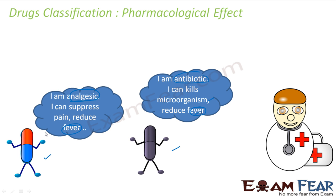You go to the doctor and say you have fever, headache, or a bad stomach. The doctor gives you medicine based on what you have. If you have fever, he will give you paracetamol. If you have headache, the doctor may give you a medicine to reduce it — and sometimes the same medicine works. This classification is based on the pharmacological effect of the drugs, and it is useful from the doctor's perspective.